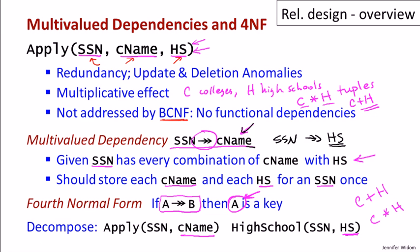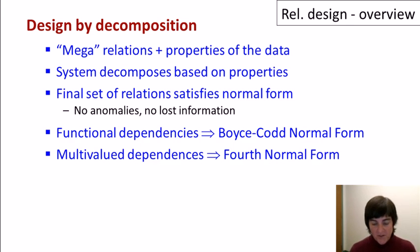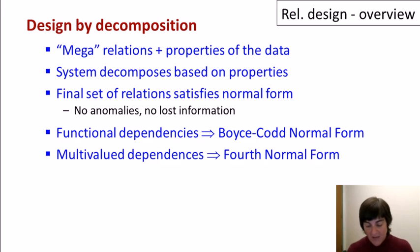To summarize, we do relational design by decomposition. We start by specifying mega-relations containing all information we want to capture, as well as properties of the data that reflect the real world. The system automatically decomposes mega-relations into smaller relations based on specified properties and guarantees the final relations have no anomalies and lose no information. We start with functional dependencies, from which the system guarantees Boyce-Codd Normal Form. We then add multi-valued dependencies, from which the system guarantees fourth normal form — which is even stronger than BCNF and is generally considered good relational design.